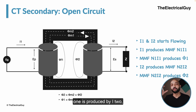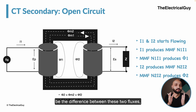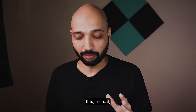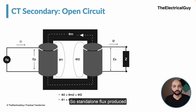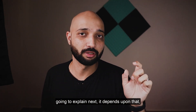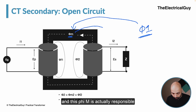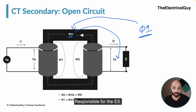There are two fluxes in the core — one produced by i1, one produced by i2 — and both are in opposite directions. So the resultant flux, the mutual flux phi_m, is the difference between these two fluxes. The mutual flux phi_m will always be less than the flux produced by any individual current standing alone. This phi_m is responsible for the secondary voltage Es.